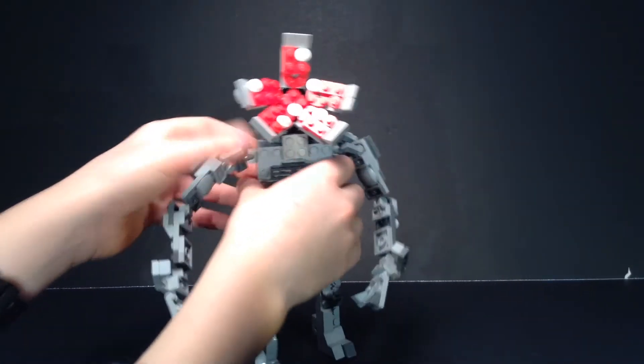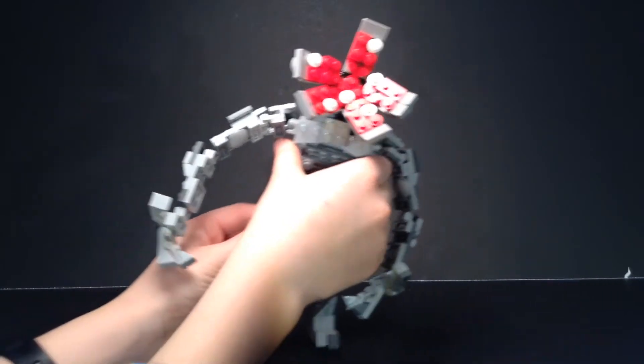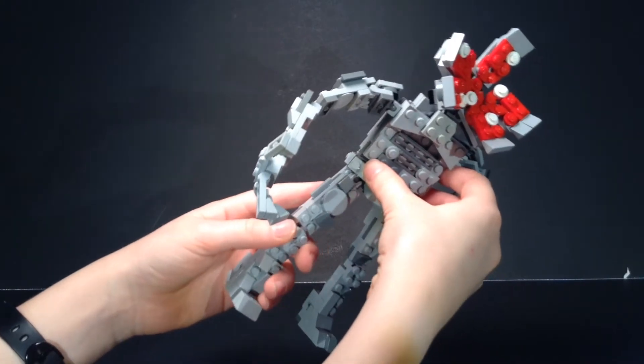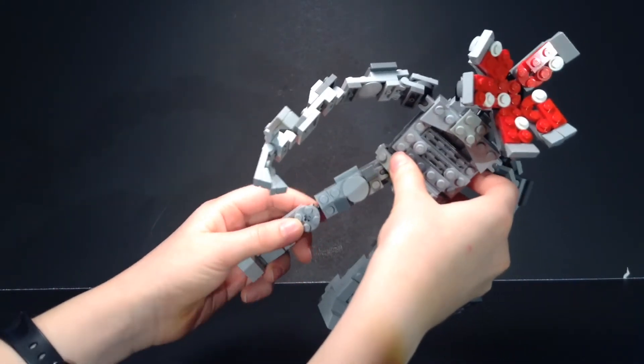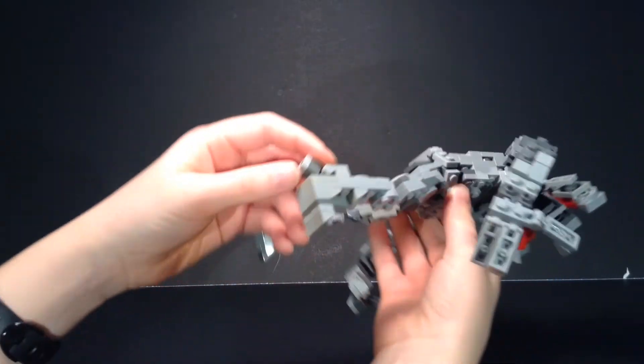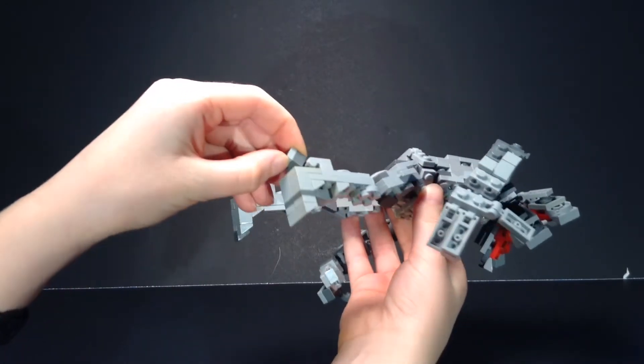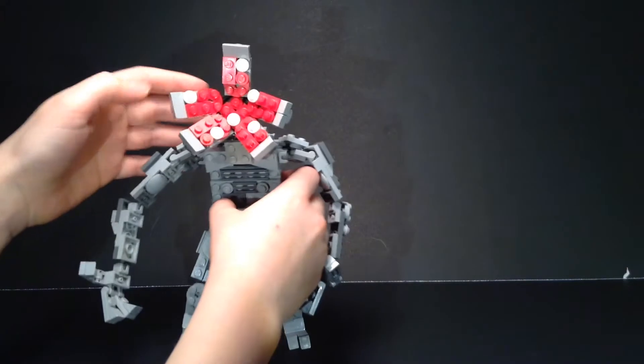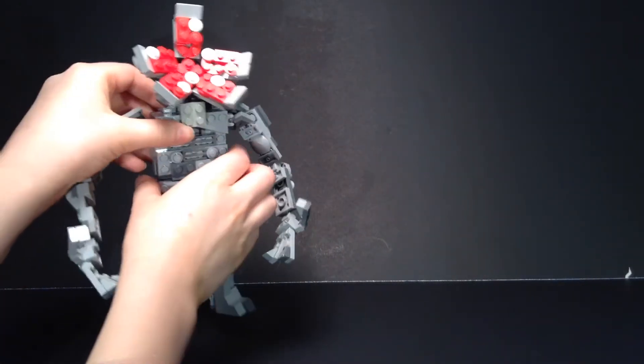For the legs, legs can move right here at the place where they connect with the hip, it can move down here at the knee and back here. Each kind of back toe can also move.